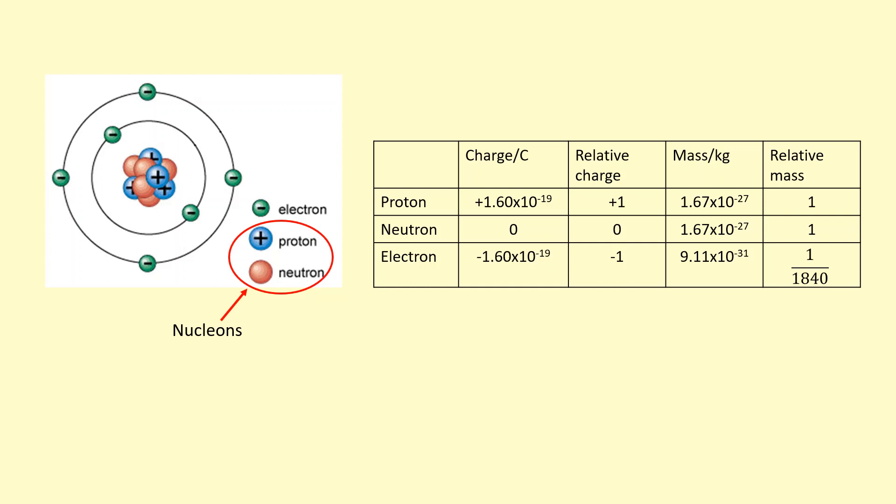So in many calculations, we can ignore the mass of the electron, especially when it's being compared to that of the proton and the neutron.